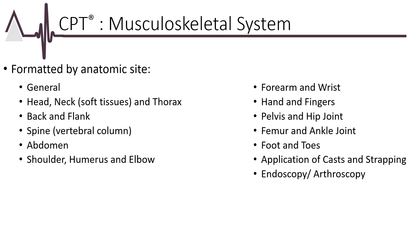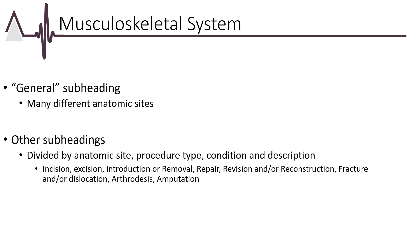The musculoskeletal CPT section is organized by anatomical site from the head down to the toes. Within each anatomic site, the codes are divided based on the type of procedure being performed, such as incision, excision, fractures, and so on. Care should be taken to read all notes, guidelines, and parenthetical statements carefully as they will help to guide code selection.